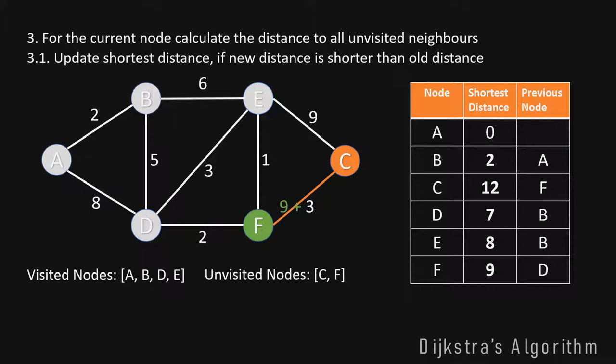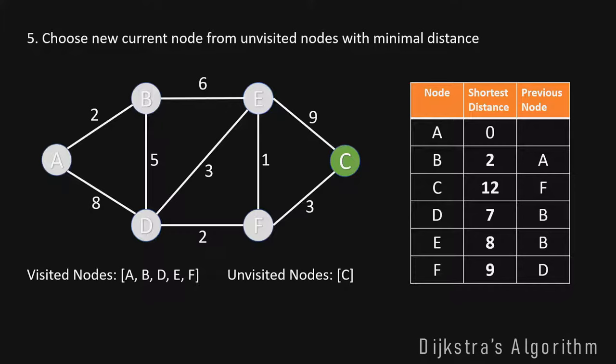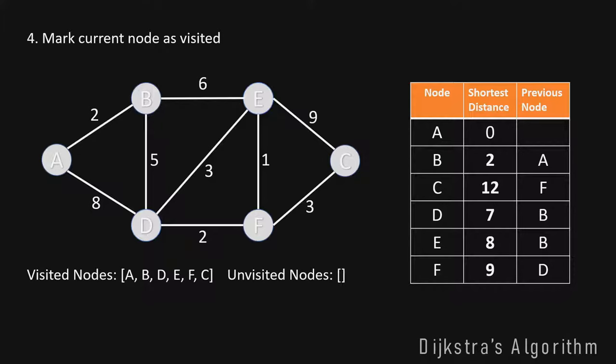This leaves us with node C. Since C has no unvisited neighbors, we are done and can mark C as finished. The algorithm is now complete, and in our table we have the shortest distance from A to every other node in this graph, as well as the previous node column which helps us reconstruct the shortest path.